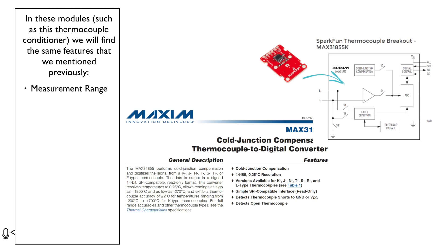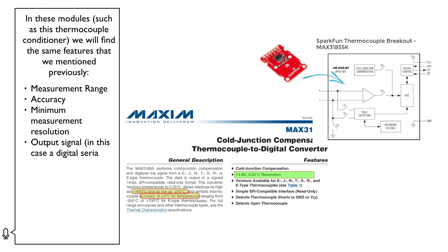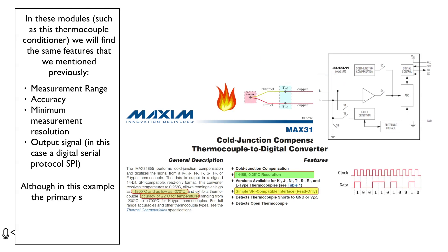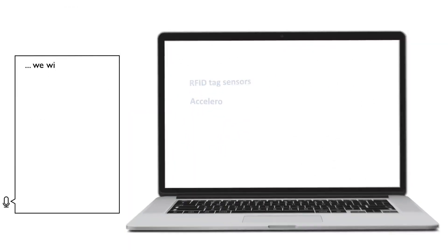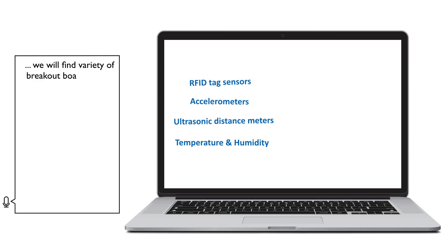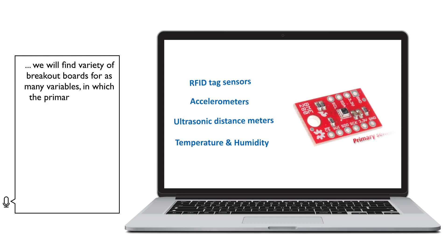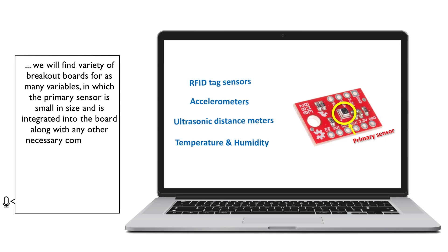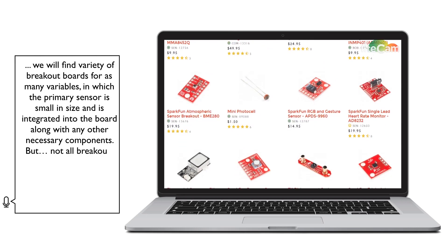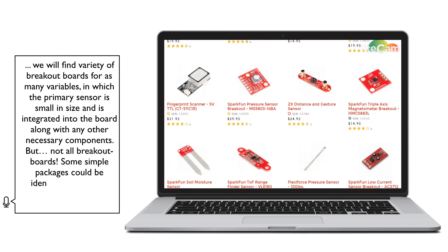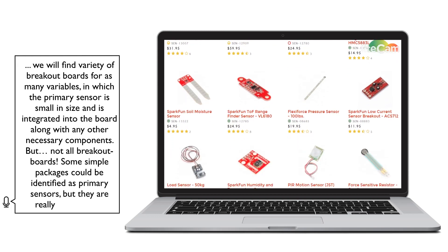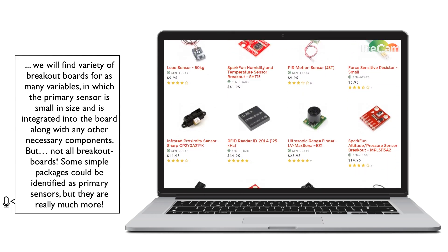In these modules, such as this thermocouple conditioner, we find the same features mentioned previously: measurement range, accuracy, minimum measurement resolution, and output signal — in this case a digital serial protocol SPI. Although in this example the primary sensor thermocouple is not integrated into the board, there is a wide variety of breakout boards for many variables in which the primary sensor is small and integrated into the board along with any other necessary components.